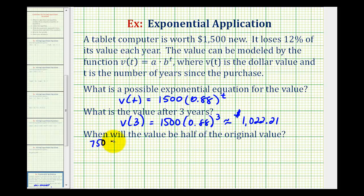So we'll have 750 = 1,500 times 0.88 raised to the power of t. So we want to isolate the exponential part of this equation. We'll divide both sides by 1,500. This will be 750 divided by 1,500, or 0.5 = 0.88 raised to the power of t.